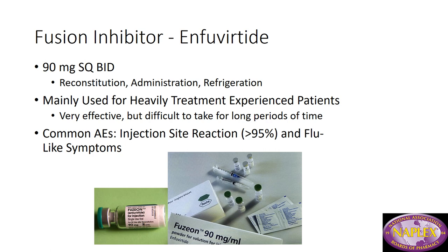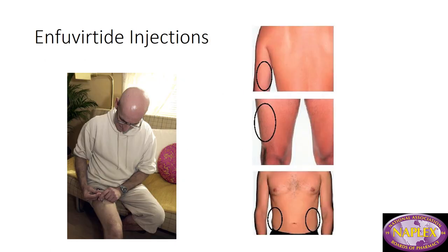Enfuvirtide must be reconstituted before subcutaneous administration twice daily — reconstitution takes about 45 minutes. If both doses are prepared together, refrigerate the second dose; it is stable for only 24 hours after reconstitution. This drug is mainly used for heavily treatment-experienced patients. It is very effective but difficult to sustain long-term due to severe injection site reactions and flu-like symptoms. It should not be prescribed to homeless patients or those without refrigeration or the ability to plan ahead. Injection sites are the same as insulin: back of the arm, upper thigh, or sides of the abdomen.